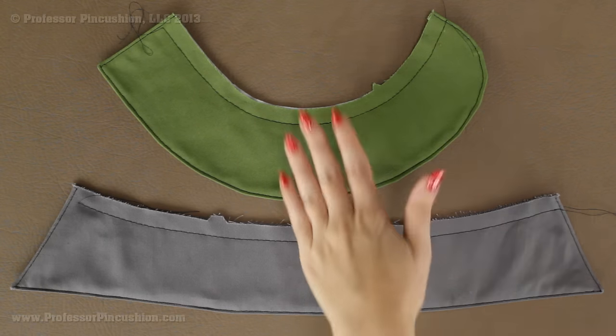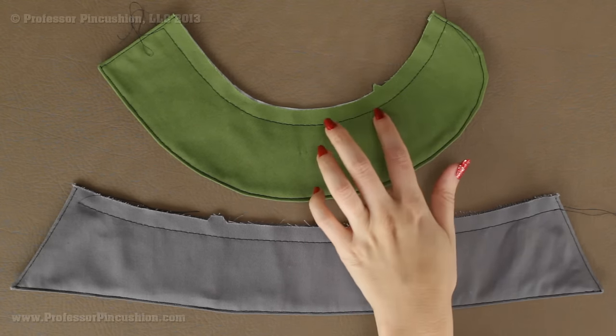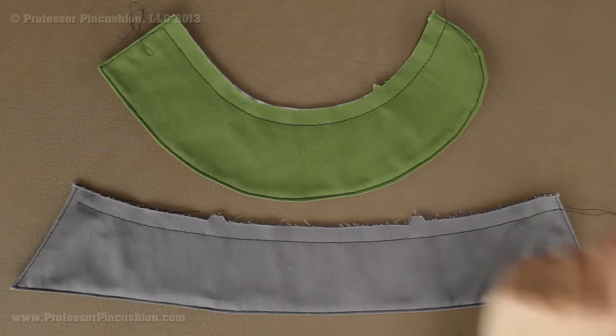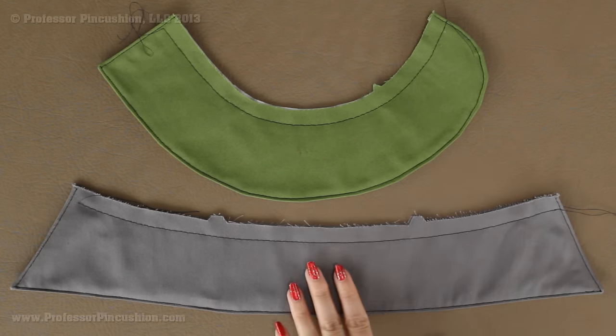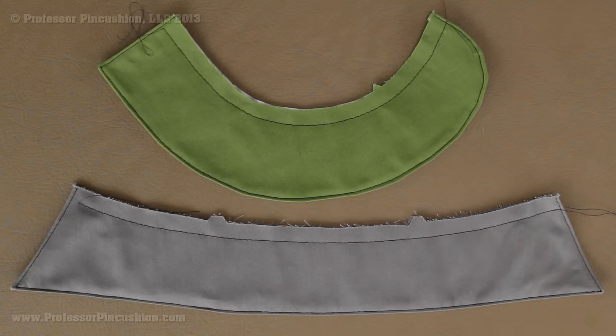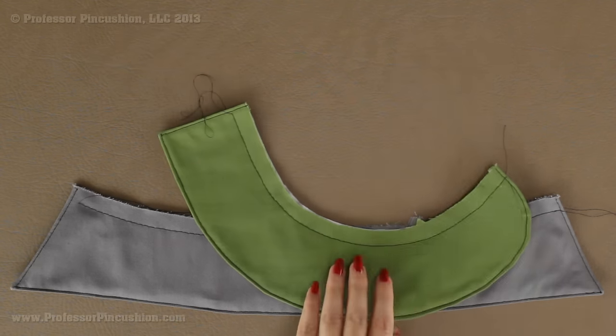Alright so here's what my collars look like so far. Basting stitch done and then I have the edge stitch on the other side. Now with some collars like with my Peter Pan collar example here, this one will end up just getting stitched directly onto the top of my bodice. The traditional collars like this one here actually get stitched to a collar band. So I'm going to show you how to do that.